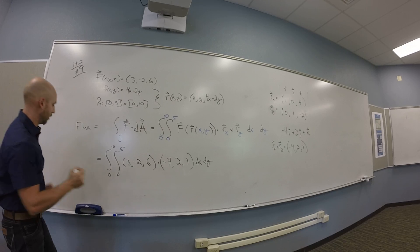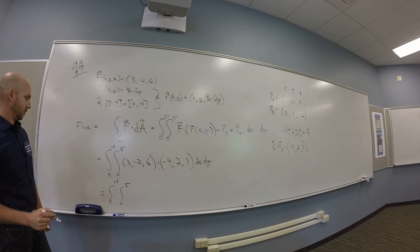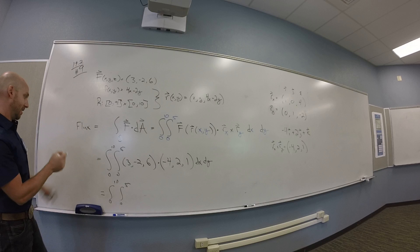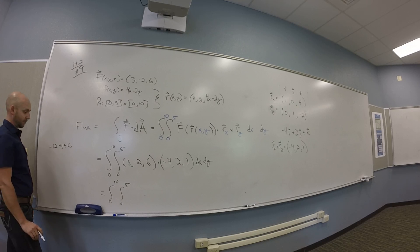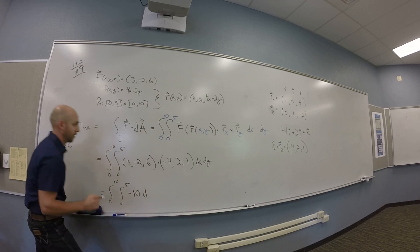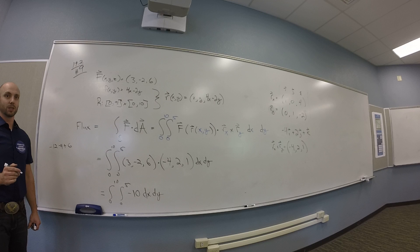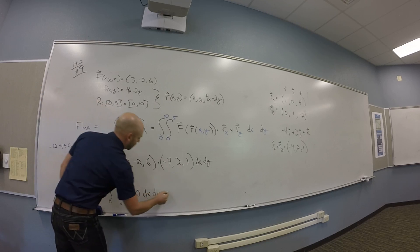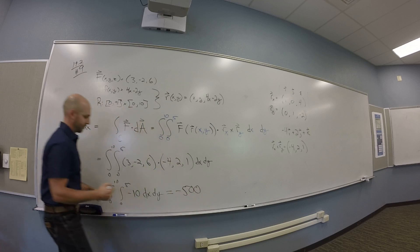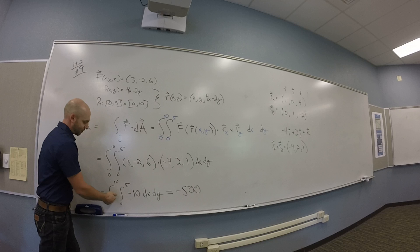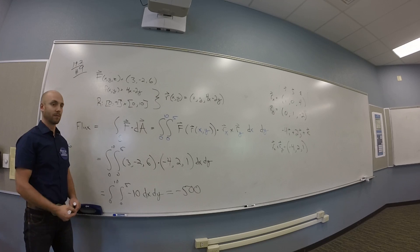And so I'm going to get out of this the integral from zero to 10, the integral from zero to 5 of what? The number. So I think I got negative 12 minus 4 plus 6. So this is negative 10 dx dy. And that is negative 500. Yeah. So it's negative 10 times the area of the rectangle. And the rectangle's 5 by 10. So what does this mean?